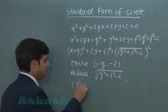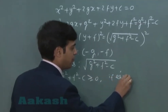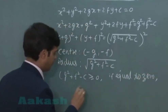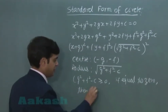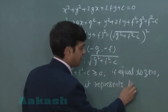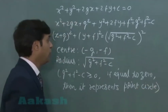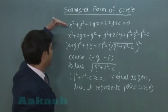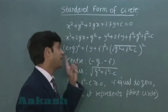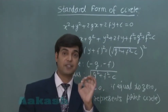The condition is g square plus f square minus c must be greater than or equal to 0. If equal to 0, it represents a point circle. So the equation of a circle in standard form is x square plus y square plus 2gx plus 2fy plus c equals 0, where the center is minus g, minus f and the radius is root of g square plus f square minus c.